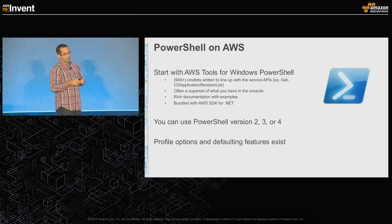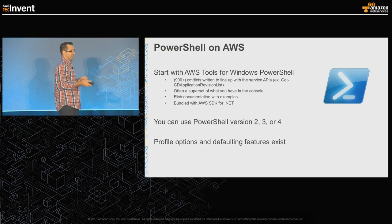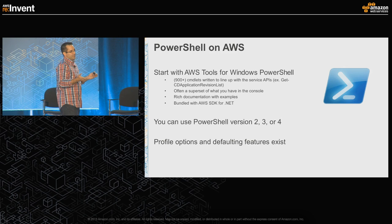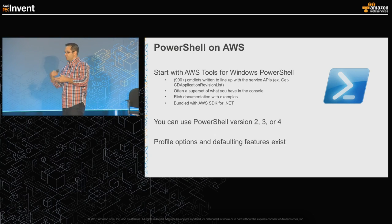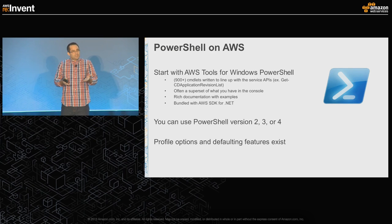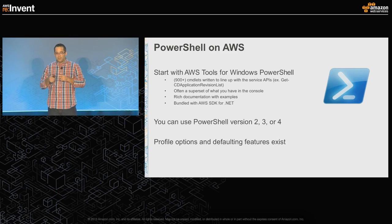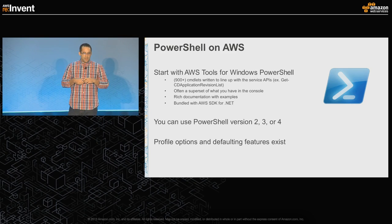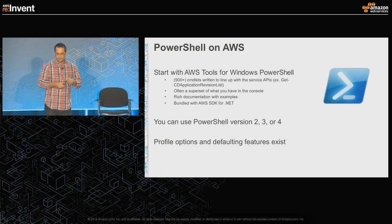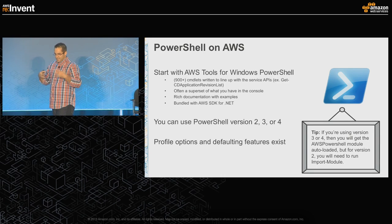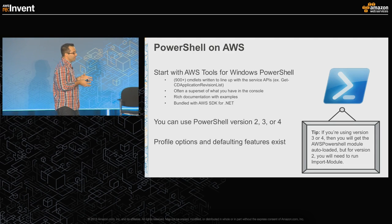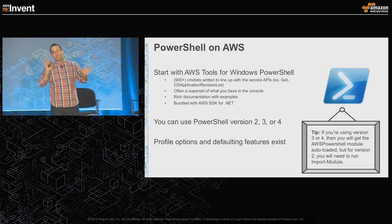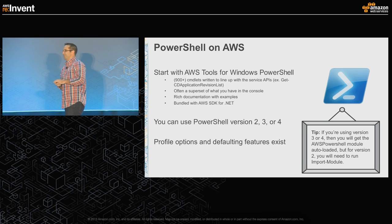AWS produces AWS Tools for Windows PowerShell with 900-plus cmdlets. If you haven't downloaded and used it, this is going to help you a lot. The 900-plus cmdlets provide ease of use on top of our APIs — all the APIs inside the services you may want to call as you execute a PowerShell cmdlet remotely or on your instances. It's bundled with the AWS SDK for .NET. You can use PowerShell version 2, 3, or 4. Version 5 is still preview. If you're using version 3 or 4, you get auto-loading; if older, you need to do the import-module manually. Profile options and defaulting features exist, so your secret key and access settings can be set up and reused across Visual Studio and these PowerShell tools.